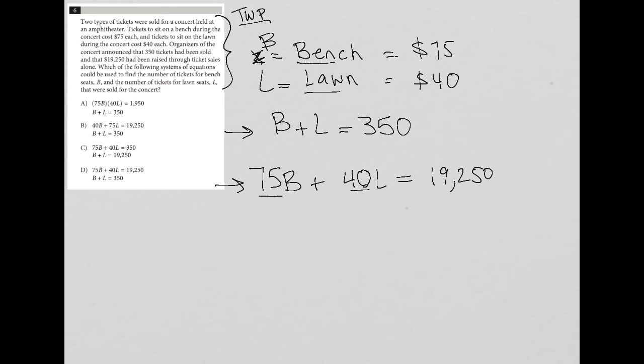Which of the following systems of equations could be used to find the number of tickets for bench seats B and the number of tickets for lawn seats L that were sold in the concert? Well, funny enough, by translating, we actually already answered that question. Here is our system of equations. So we're just going to find which answer choice matches what we have written down. Choice A looks like they're multiplying 75B times 40L. So that can't be the case because we want to add those two things together.